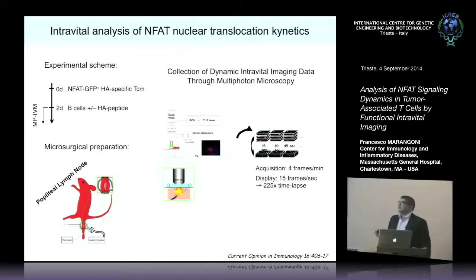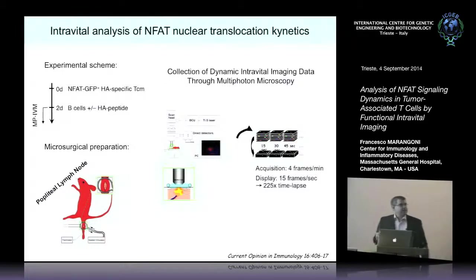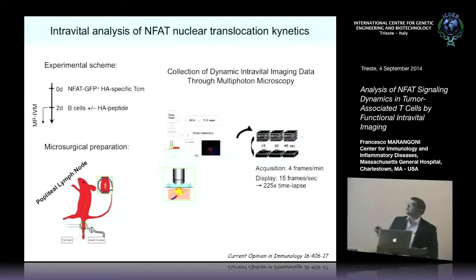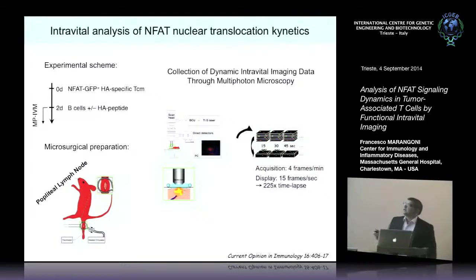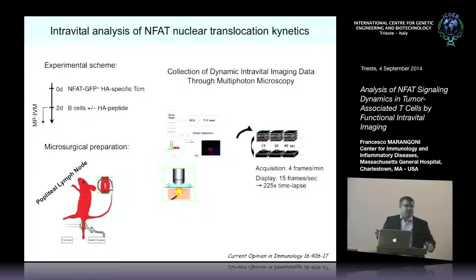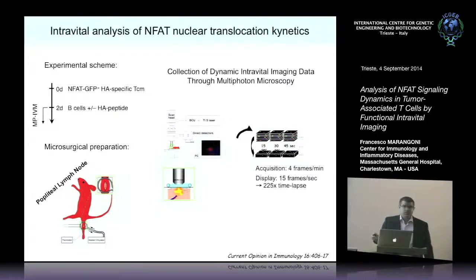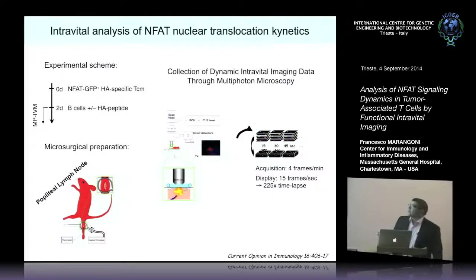It is time to go in vivo. The first question we asked is how fast is NFAT signaling occurring. We used this experimental scheme: we generated HA-specific CD8 cells transduced with NFAT-GFP and a nuclear counterstain, differentiating them into T central memory so that they can home to the lymph node easily. After a couple of days, in which the T cells parked to the node, we injected antigen-presenting cells — in this case simply B cells that had or had not been pulsed with the cognitive peptide. We prepared the lymph node for imaging and acquired movies.